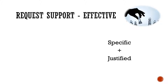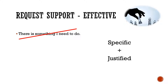So let's look at some bad examples. 'There is something I need to do' — that's not specific. What do you need to do? So that would be a poor example. 'I have a family problem' — again, this is not specific.